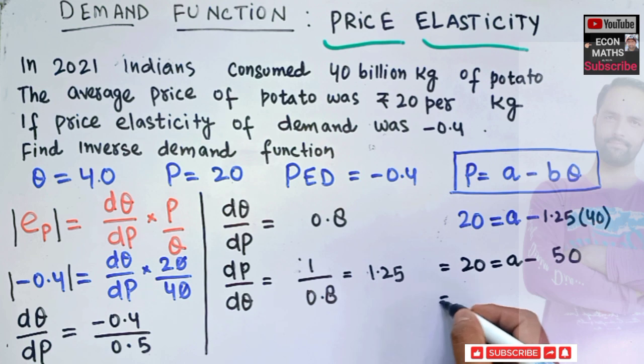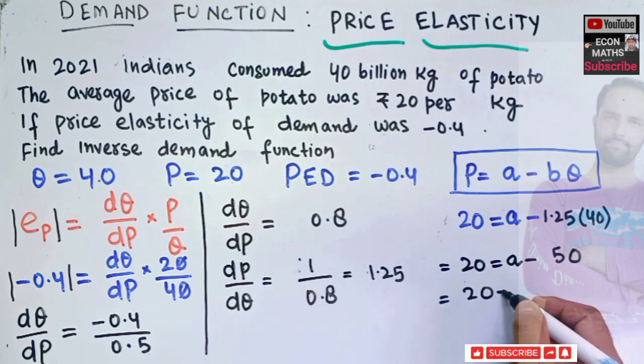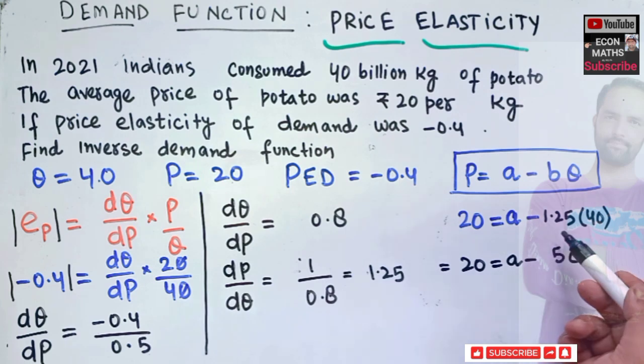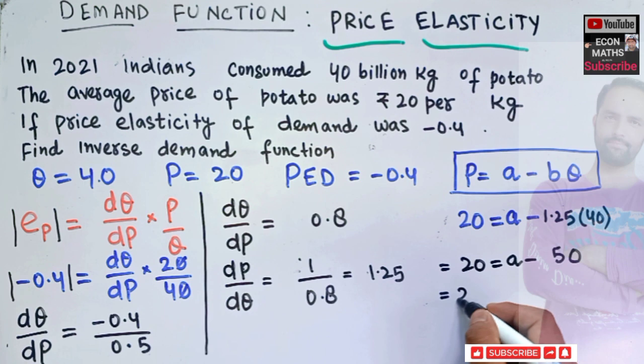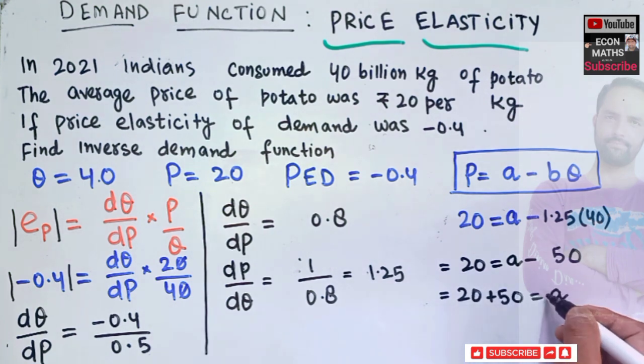Which gives us A, if I transpose it here, so this is 20, A minus 50. Or we can do one thing here, if I transpose this minus 50 here, it will become positive, so we have 20 plus 50 is equal to A. The value of A we got as A is equal to 70.